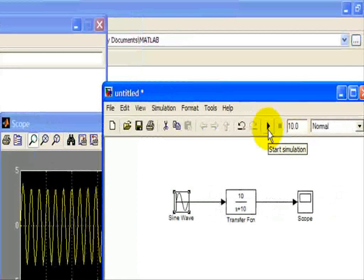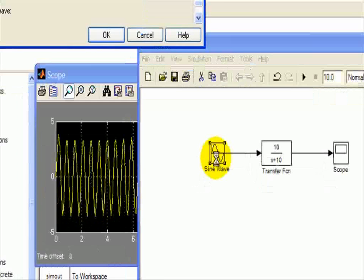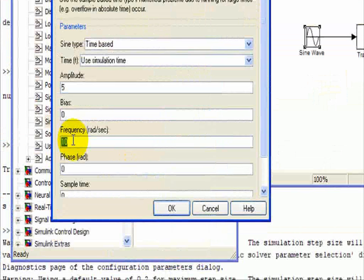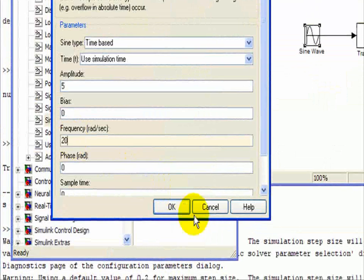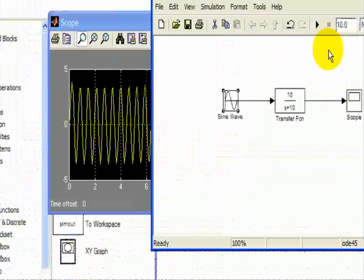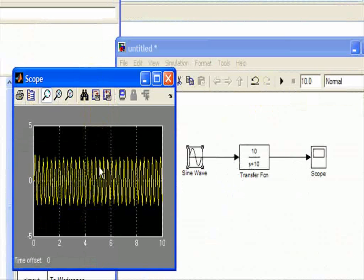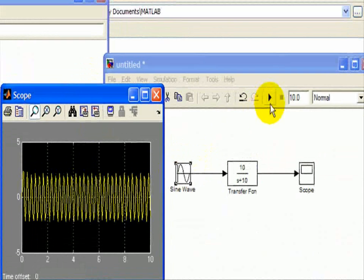Finally, we'll go 10 times as much by changing our input frequency to 20 radians per second, and we'll run it again. We can see that it decreases even more.